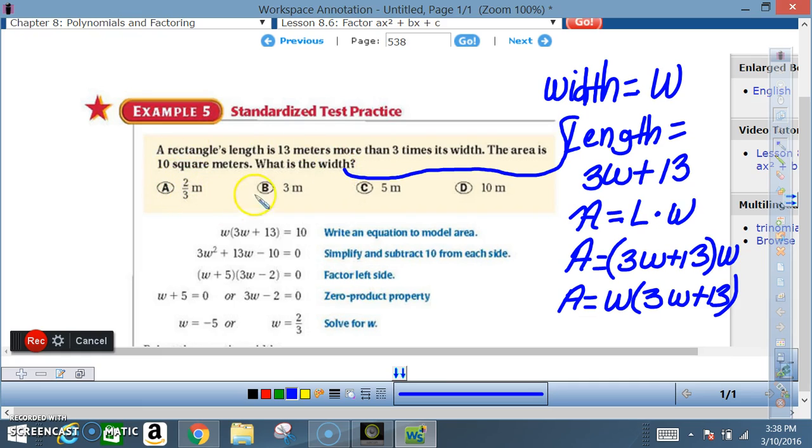A: two-thirds meters, B: three meters, C: five meters, D: ten meters. First off, noticing the problem, they never tell us what the width is. So we say that the width is equal to w. They do tell us...